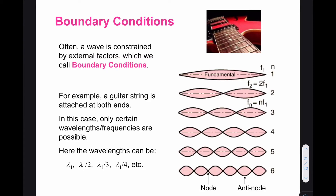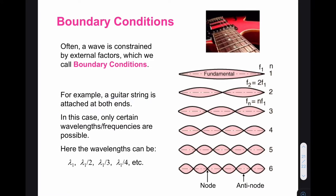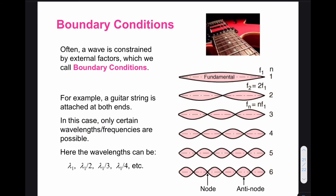Many times a wave is constrained by external factors called boundary conditions. For example, a guitar string is attached at both ends, so only certain wavelengths or frequencies are possible. The possible wavelengths are λ, λ/2, λ/3, λ/4, and so on. The fundamental frequency has two nodes at the ends and one antinode. The next possible frequency has three nodes, then four nodes, then five nodes, and so on, forming harmonics of the fundamental frequency.